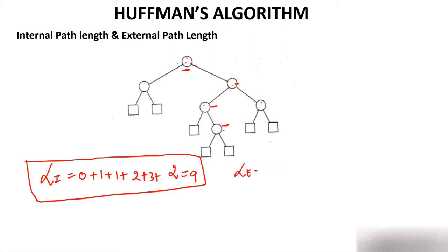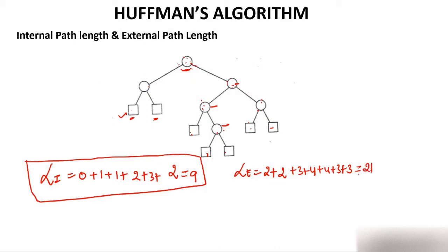For the external path length, you calculate the distance of each external node from the root and sum them. Computing the levels of all 7 external nodes — 2, 2, 3, 4, 4, 3, 3 — and adding gives an external path length of 21.